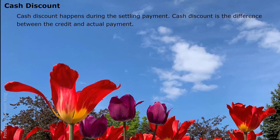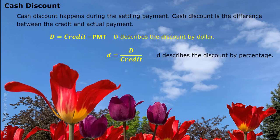After the trade discount, we need to understand the cash discount. Cash discount happens during the payment settling period. It is the difference between credit received and actual payment. If you do not have any discount, the credit you received equals exactly how much payment was made. If you do have a discount, the credit received would be bigger than the actual payment made.